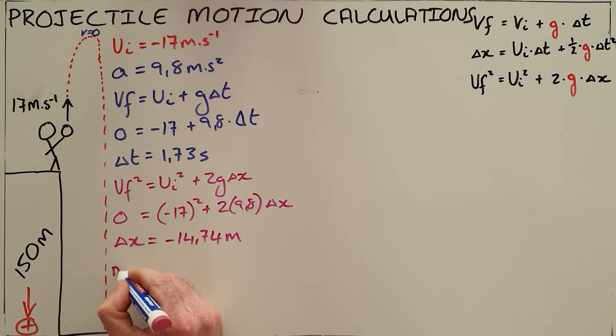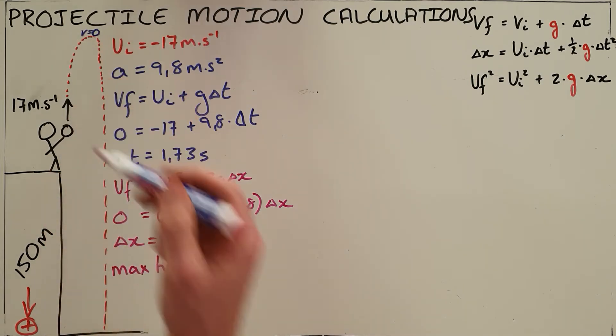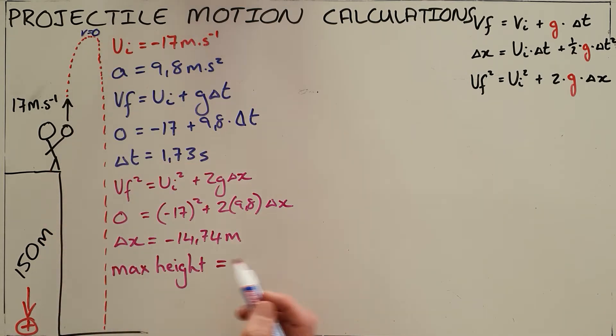The question would often specify the maximum height above the ground, which means that it would be the height from where it was launched added to the height that it reaches, so 150 meters plus 14.74 meters above the ground.